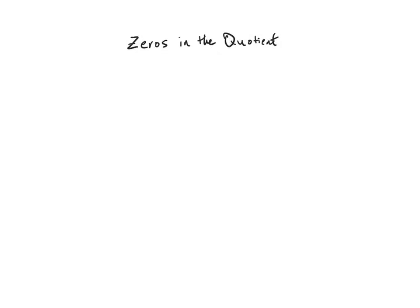In this video, I'm going to show you some long division examples with zeros in the quotients. So this first example will be 4,853 divided by 5.